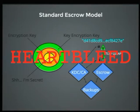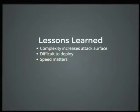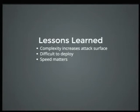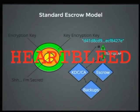We've made it easy to get the key back, but we've also opened ourselves to a lot of new risk. Lessons learned: complexity increases the attack surface, escrow is difficult to deploy, and speed matters. Because if you look at all this complexity, every single hop in this complex chain adds latency.